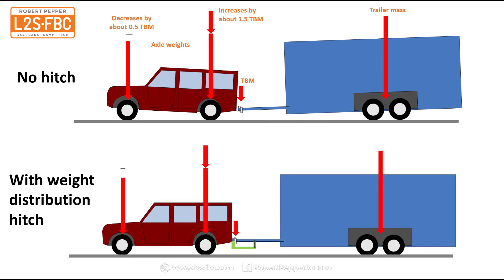Now if we add a weight distribution hitch—that's the green thing, pretty good diagram I reckon—what I've done at the moment is made the bottom diagram exactly the same as the top diagram but without accounting for the weight distribution hitch.